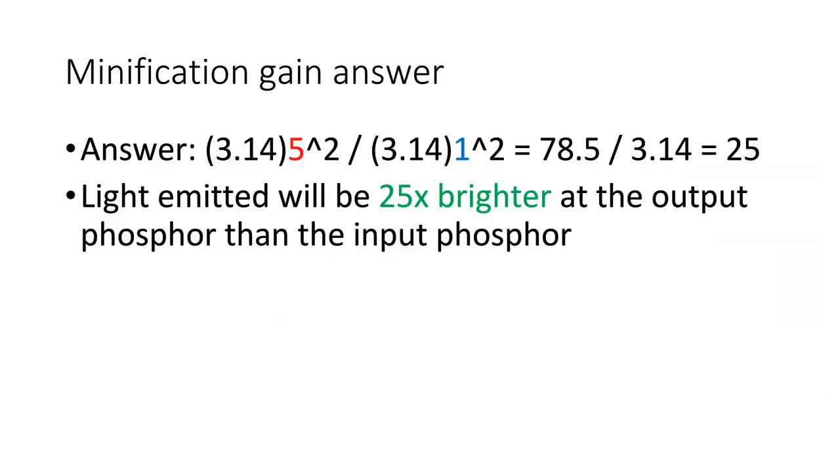If the input phosphor has a diameter of 10 inches and the diameter of the output phosphor is 2 inches, what is the minification gain?